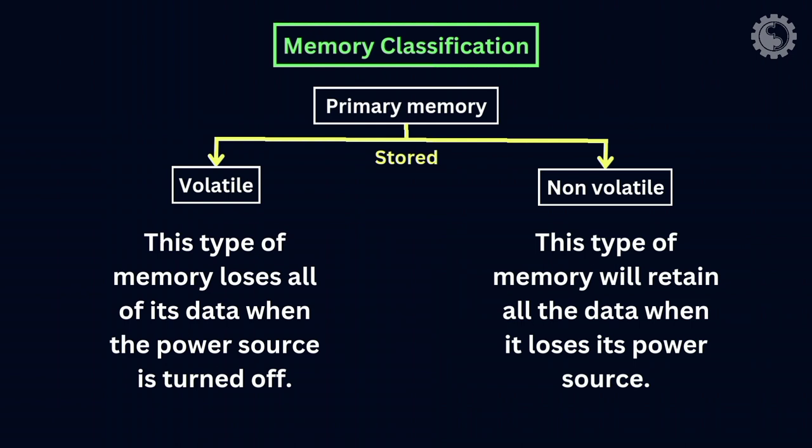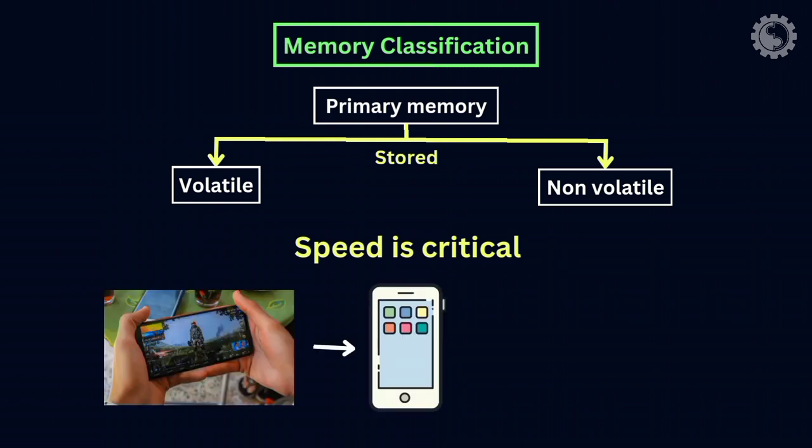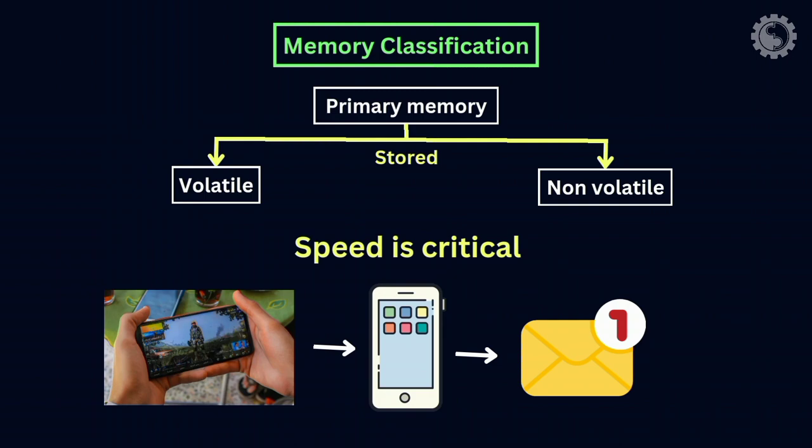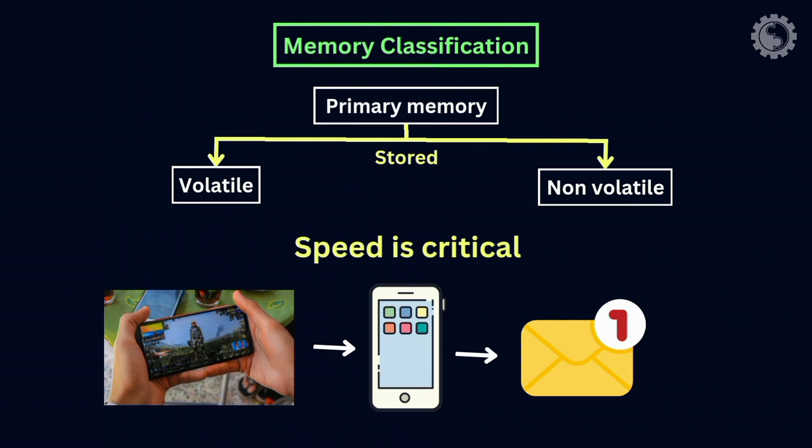In primary memory, speed is critical because it holds the data currently being used and changed. For example, if you're playing a video game on your device and receive an important email from your office, you pause the video game and move to the email application, where the game is stored in an active state for you to access again.